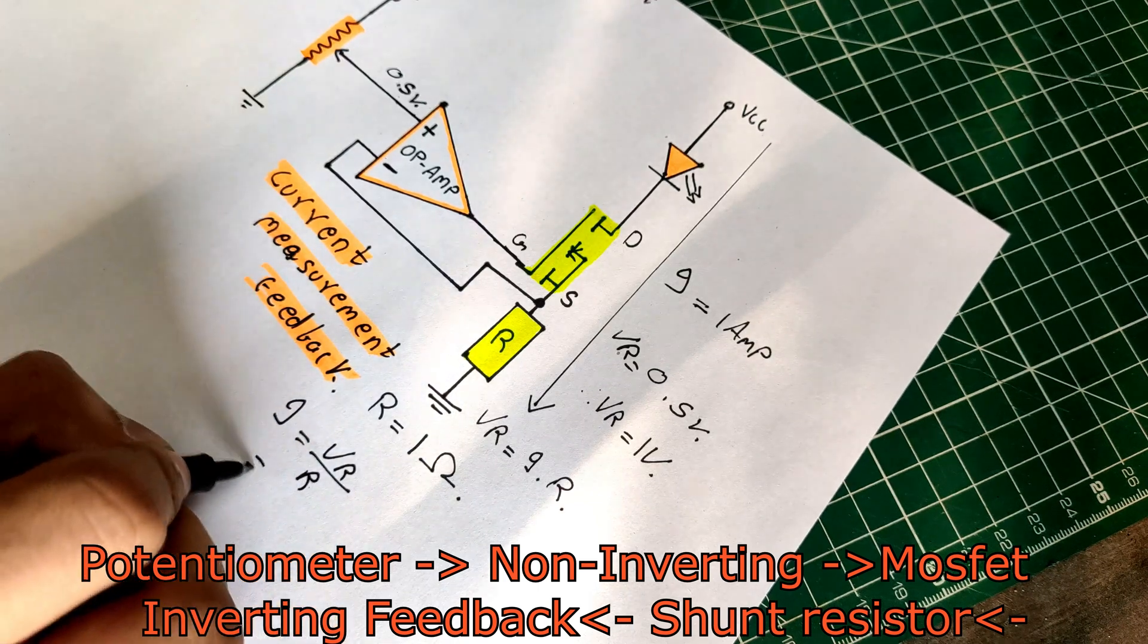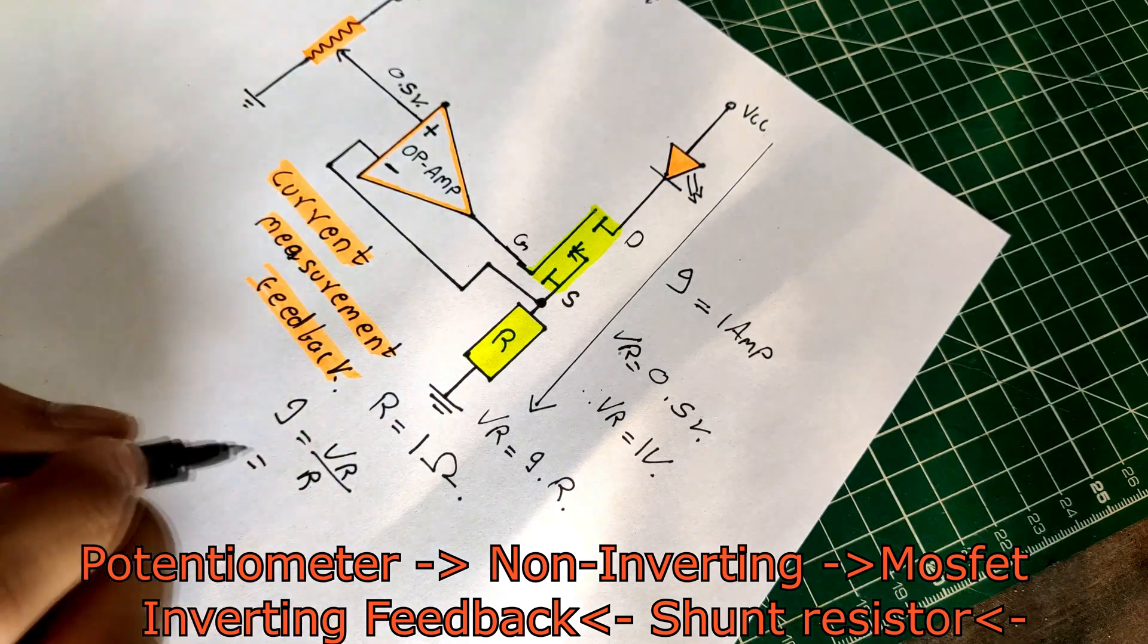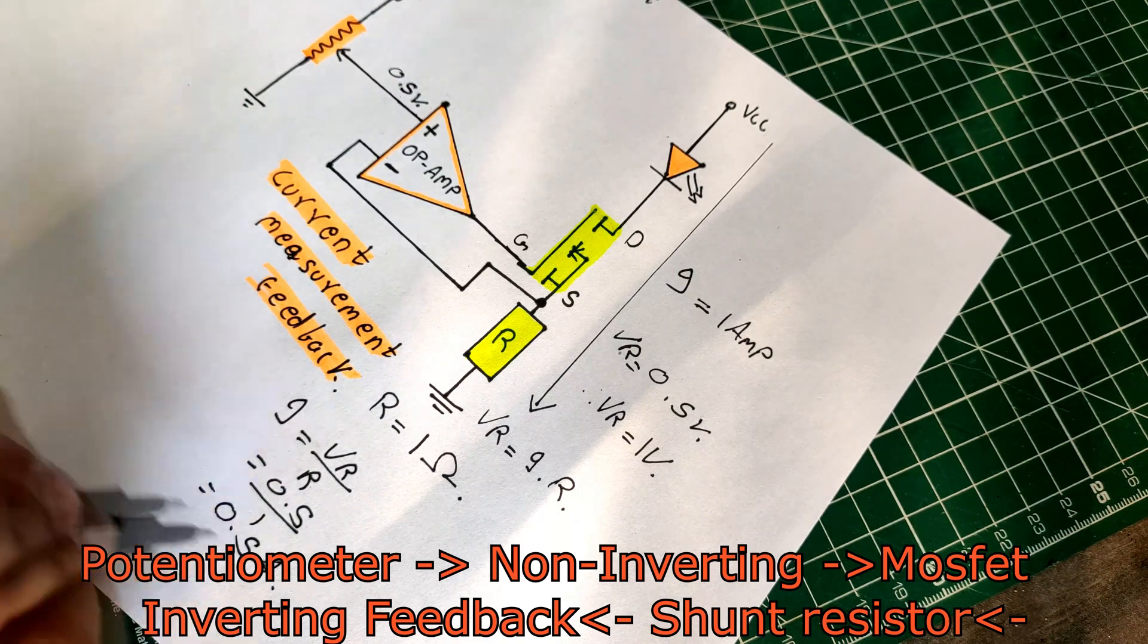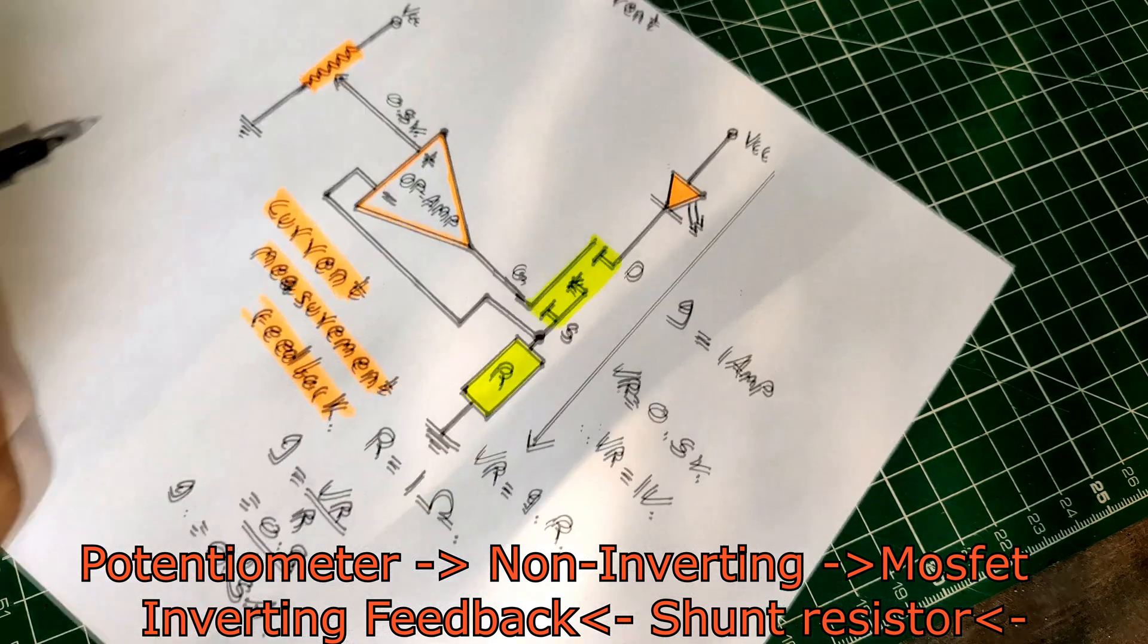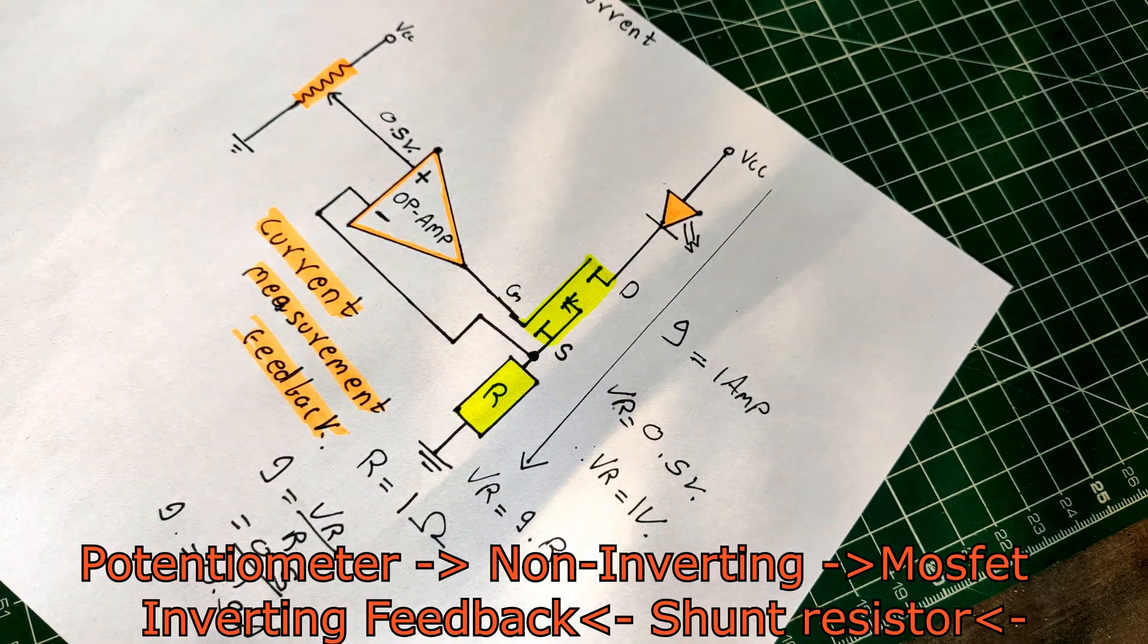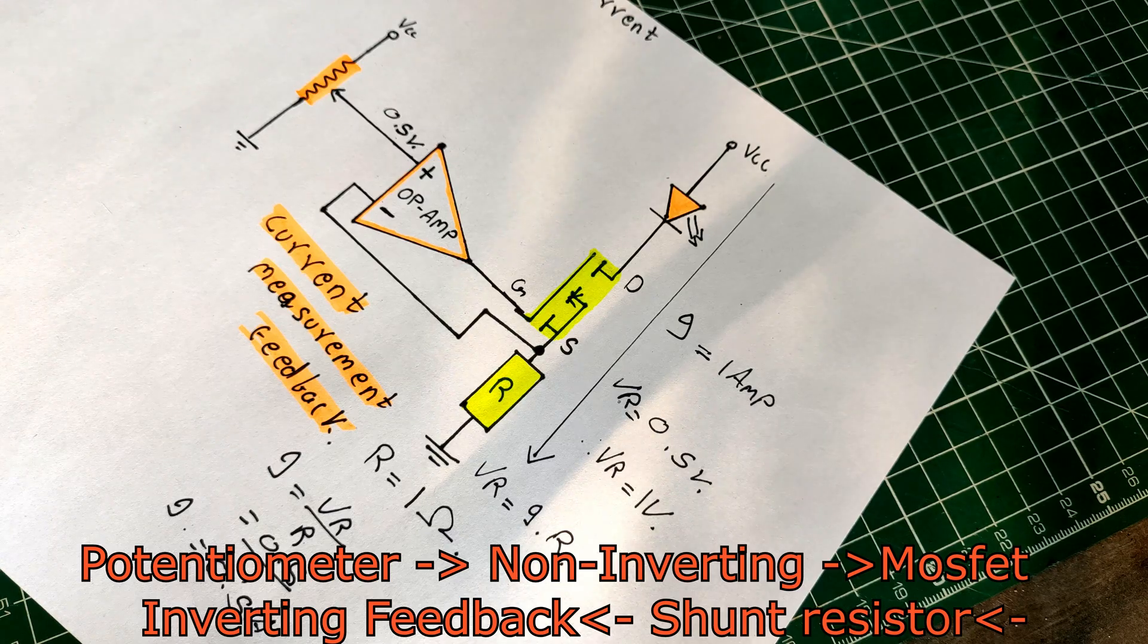But the current is dependent on the MOSFET, whose gate is connected to the output of the op-amp, hence it's a closed loop circuit. Now when we set the potentiometer, the op-amp will turn on the MOSFET until the inverting pin reaches the same voltage level. Then it will try and keep the current constant.